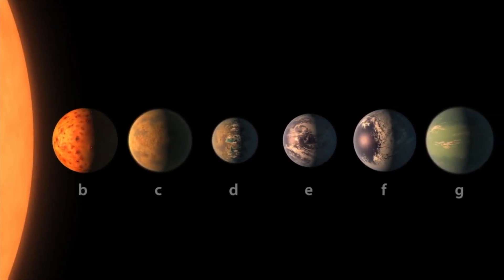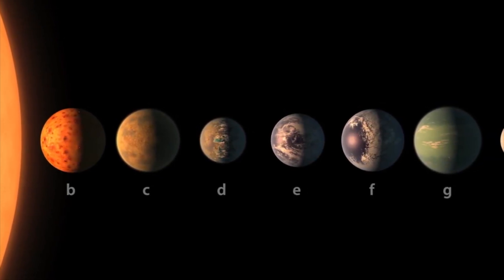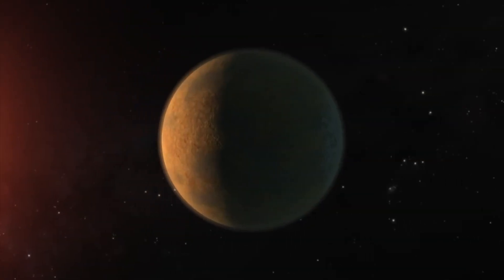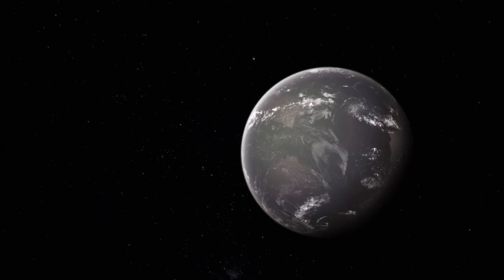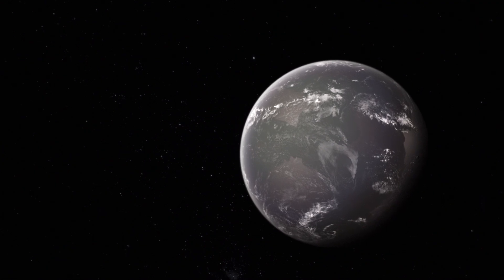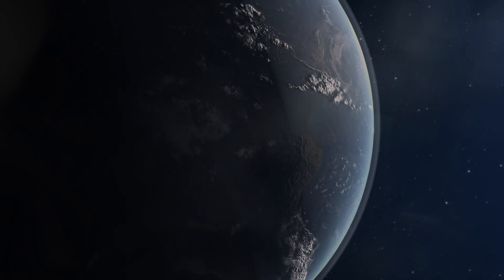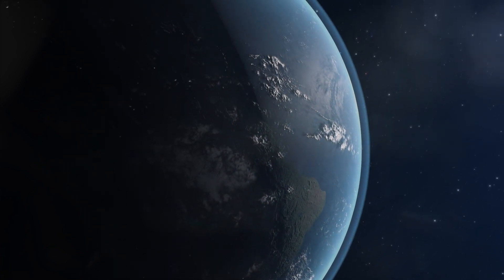Webb will also examine the seven planets and the TRAPPIST-1 system, checking each one for an atmosphere as it scans the entire system. Astronomers will pay particularly close attention to TRAPPIST-1E, which is the most Earth-like planet in the neighborhood. If it is livable, then its atmosphere, especially its clouds, may provide indications of such.